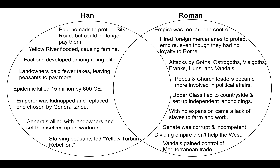The Vandals, one of those nomadic tribes, gained control of the trade routes. So without that trade, the Roman Empire — the western half — is going to suffer tremendously. The economy is going to suffer.